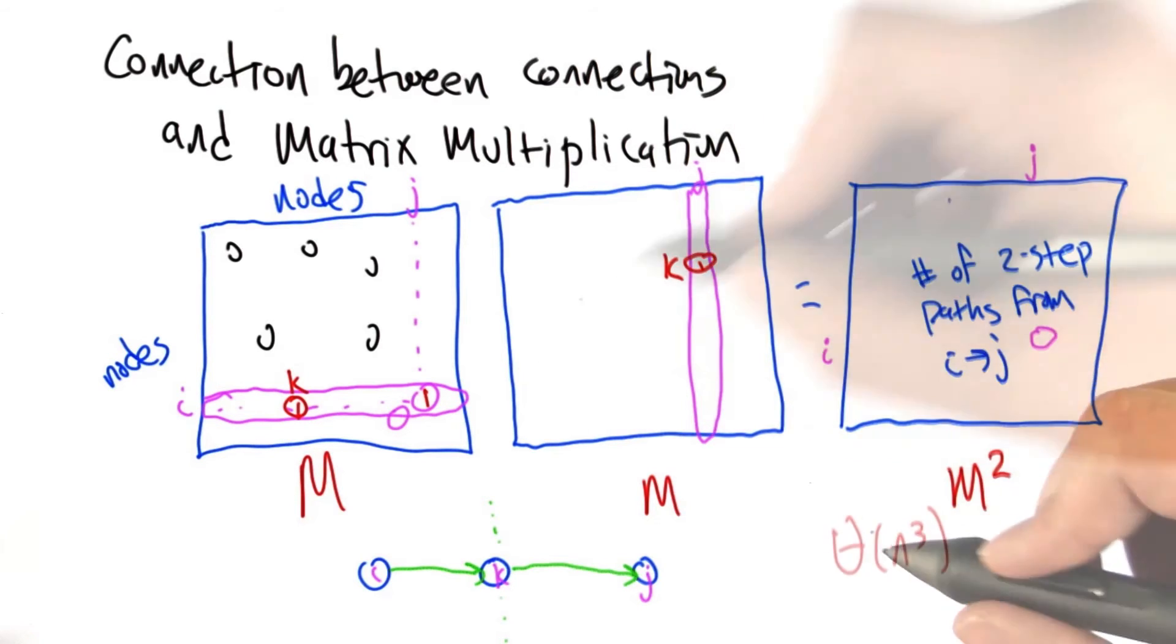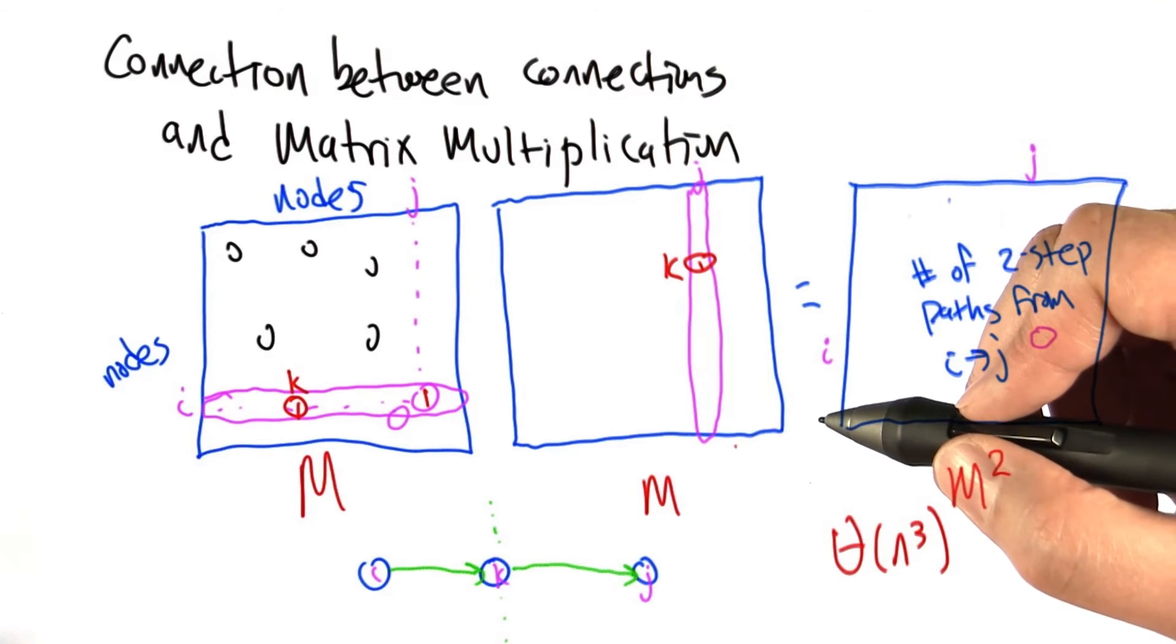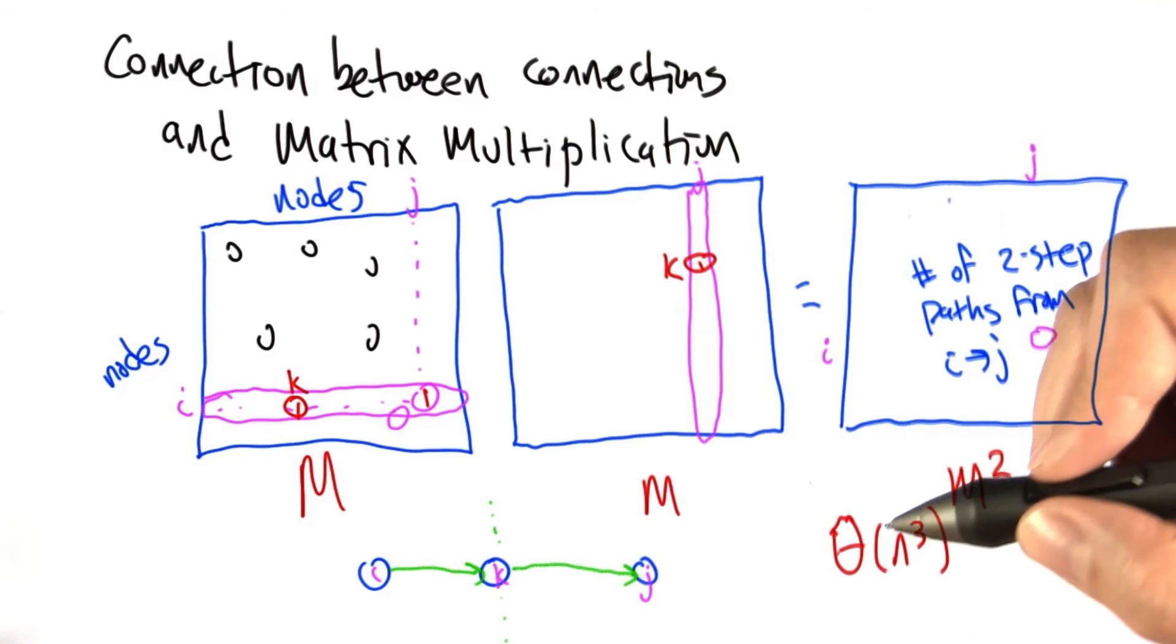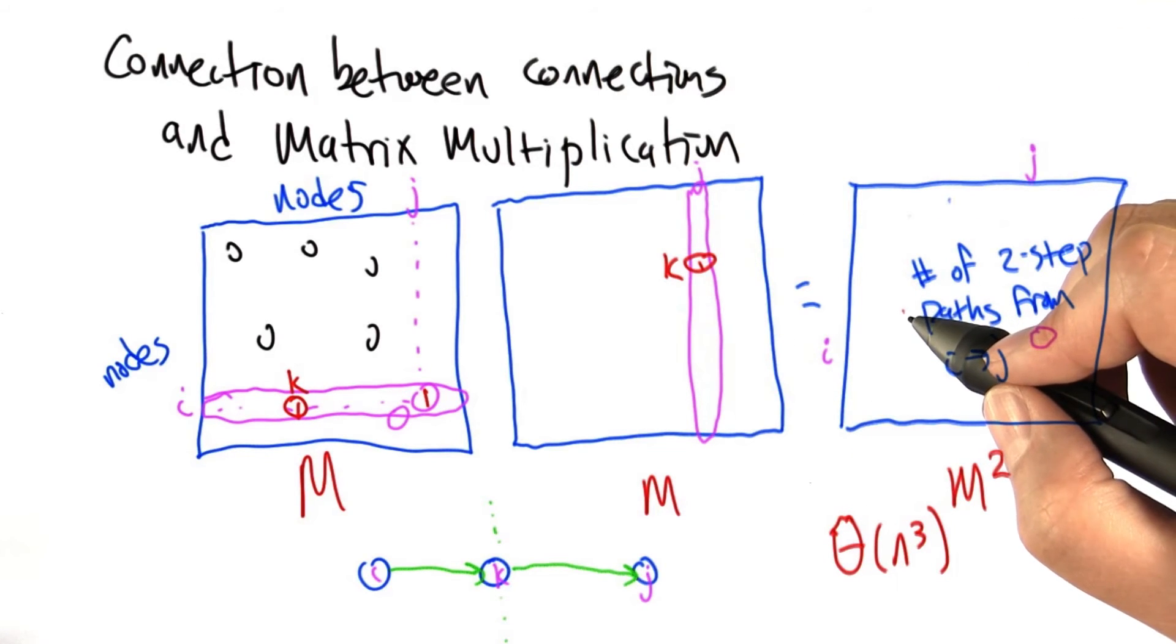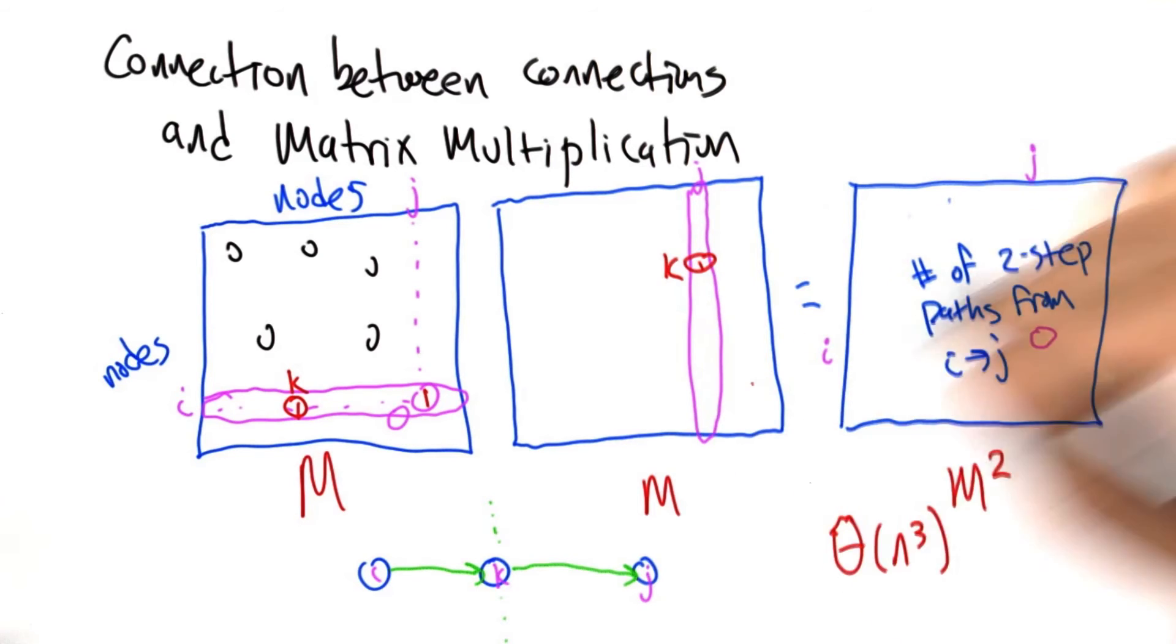The running time of this algorithm is n cubed, because we're looping through for each of the entries of this matrix that we're going to fill in, and there's n squared of them. We're doing this row by column multiplication, which also takes time n. So it's n cubed.